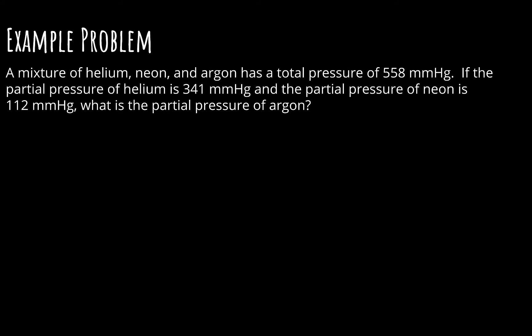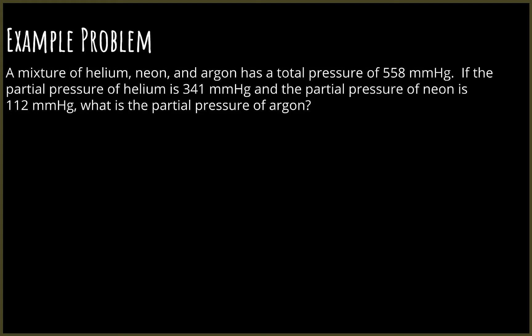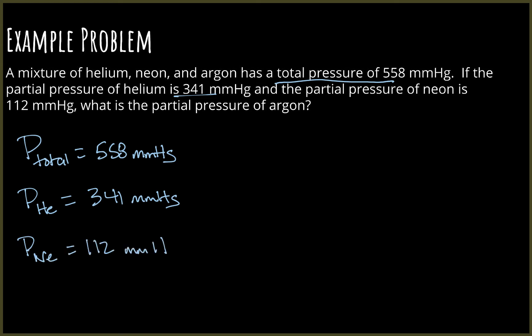So this is what one of these would look like. We have a mixture of helium, neon, and argon, and this mixture has a total pressure of 558 millimeters of mercury. If the partial pressure of helium is 341 millimeters of mercury, and the partial pressure of neon is 112 millimeters of mercury, what is the partial pressure of argon? Just like before, we're going to make a list. Our P total equals 558 mmHg, the pressure of helium is 341 mmHg, partial pressure of neon is 112. I want to know what the partial pressure of argon is.